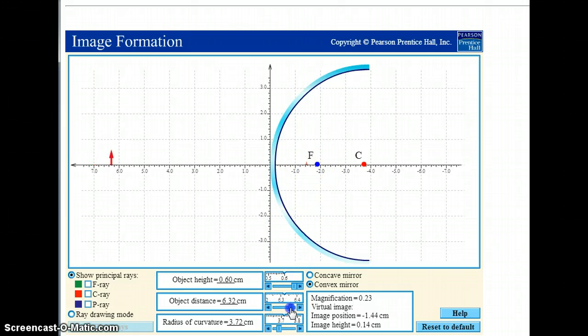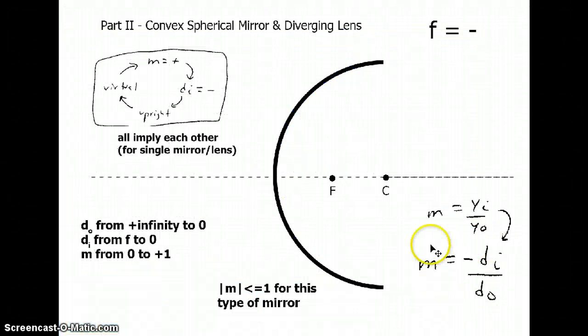And if I slide this in, you'll see they're about to meet. Now, notice that the image is always closer, and because it's always closer, it's always smaller. So again, remember that this equation implies that since the image distance is smaller, the magnification is less than 1.